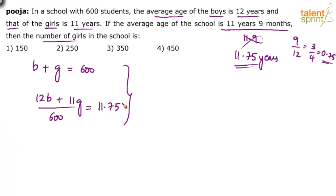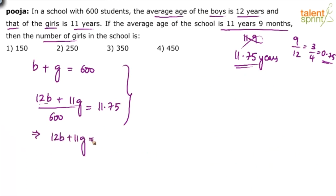The average age of the entire class is 11.75. Sum of ages of boys plus sum of ages of girls divided by total students gives us: 12B + 11G = 11.75 × 600. Multiplying out, 11.75 × 600 = 1175 × 6 = 6600 + 450 = 7050. So 12B + 11G = 7050.